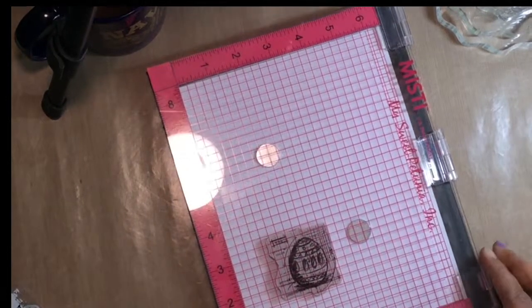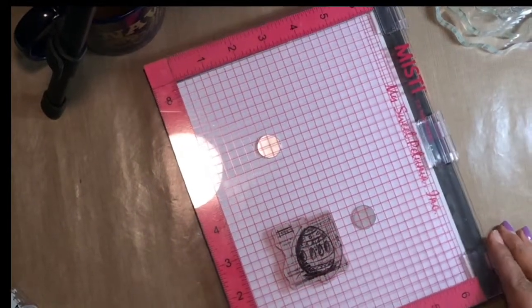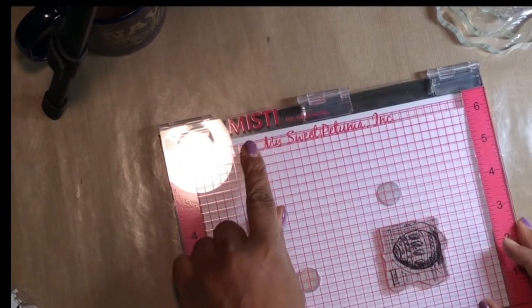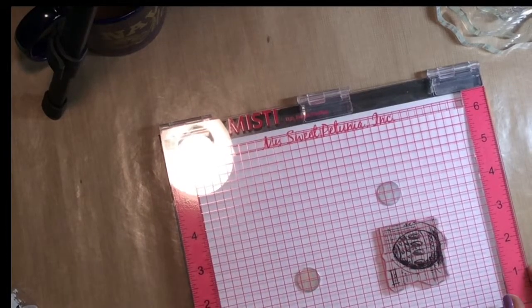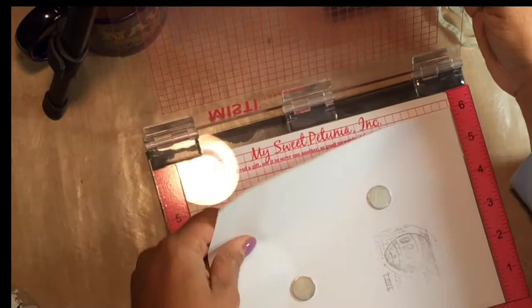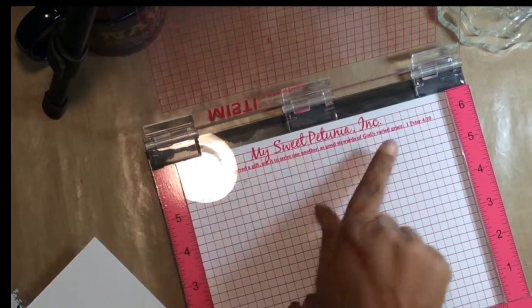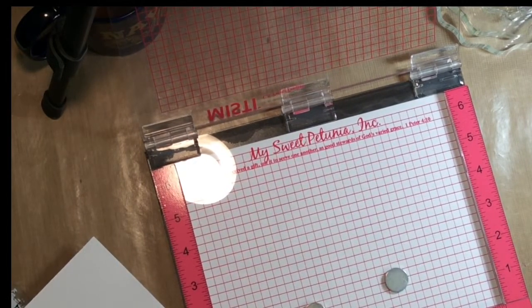I will be stamping using the MISTI tool, which is a new tool that's been created by a young lady over at My Sweet Petunia. MISTI stands for Most Incredible Stamping Tool Invented. And it really helps to line up the stamps so that you get an accurate, complete stamp every time. So if you miss stamp, you just close it up again and it lands right in the exact spot that you stamped previously.